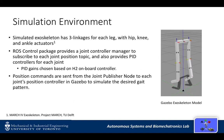The simulated exoskeleton consists of three linkages for each leg, with hip, knee, and ankle actuators. The ROS control package establishes a PID controller for each joint, and also subscribes to the joint position ROS topics to simulate the desired gait pattern.